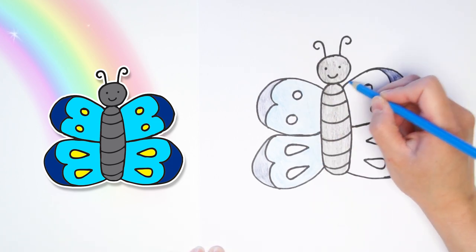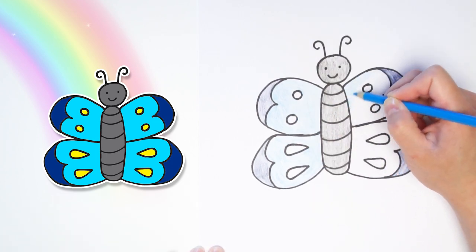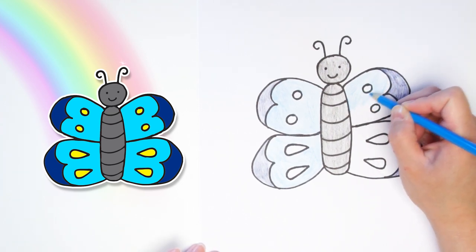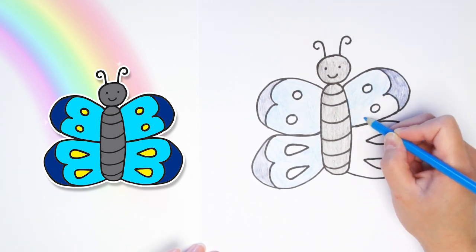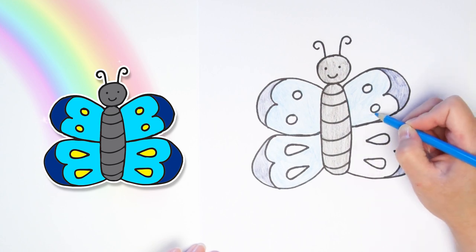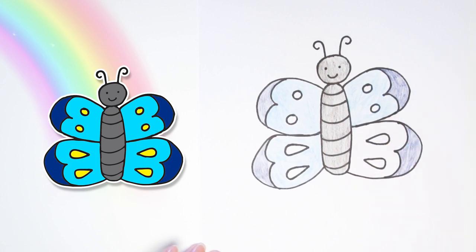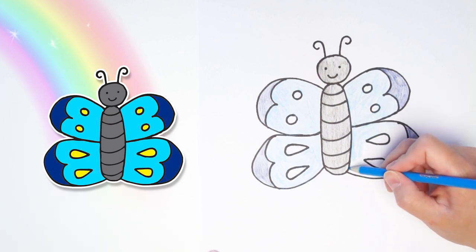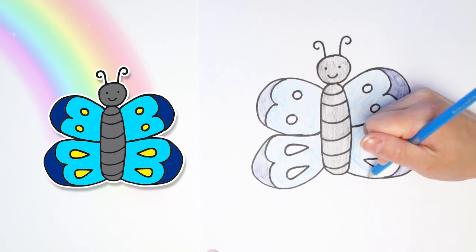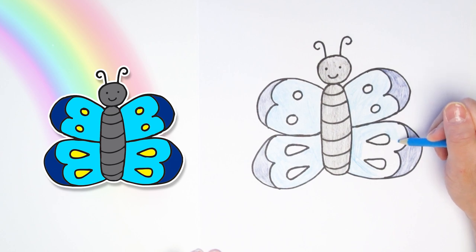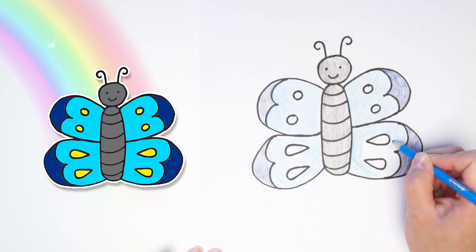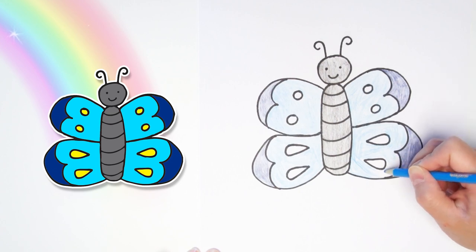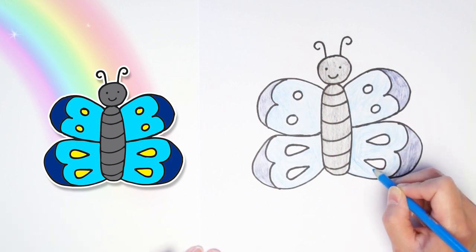Since there are thousands of butterflies all over the world, you can color your butterfly any color you want. And if your butterfly looks a little bit different than mine, don't even worry about it. Because butterflies come in all different shapes and sizes with different designs. They are all so unique and so special. Just like the drawing that you made. It may be different, but it is still beautiful.